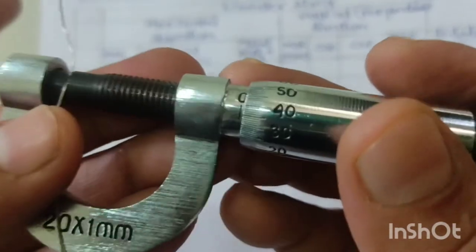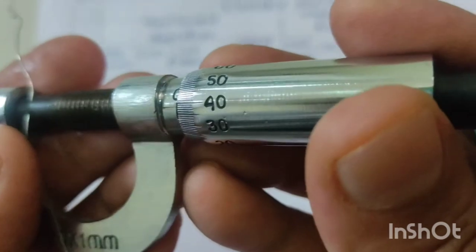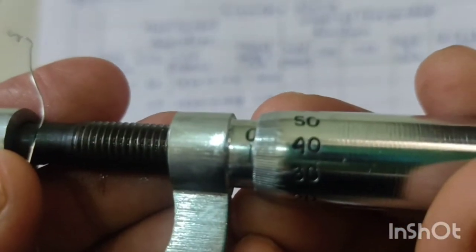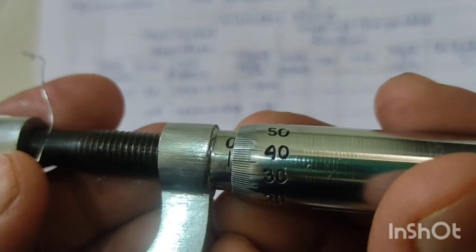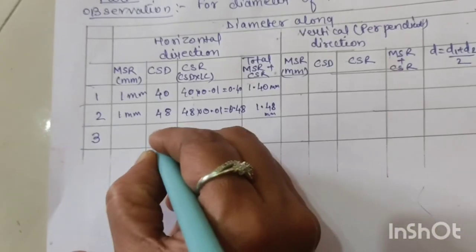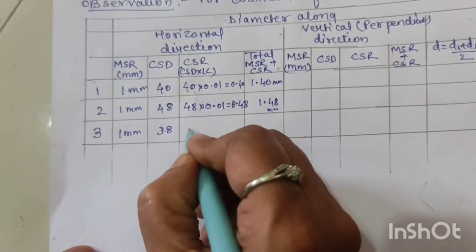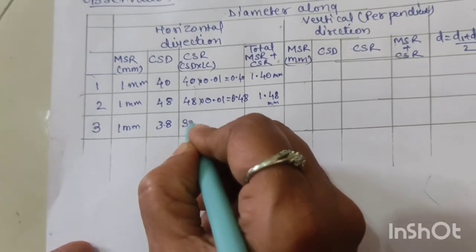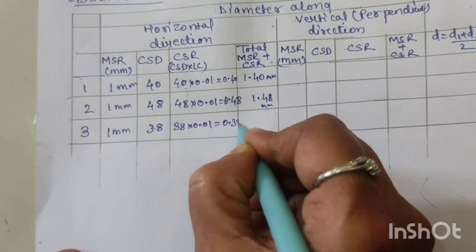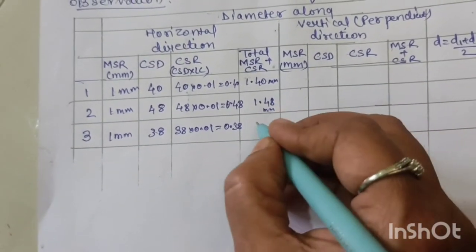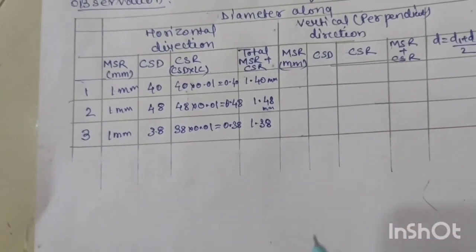At a third horizontal position, the MSR is again 1 mm, and the CSD is 38. So CSR = 38 × 0.01 = 0.38 mm. Total reading = 1 + 0.38 = 1.38 mm. These are the three horizontal direction readings.